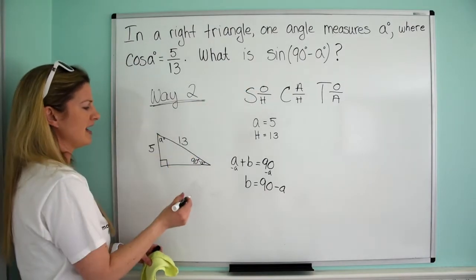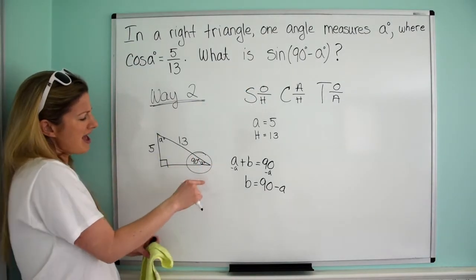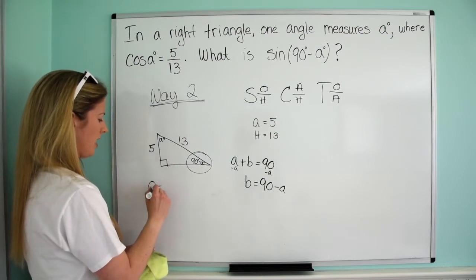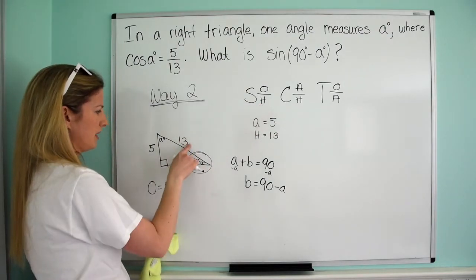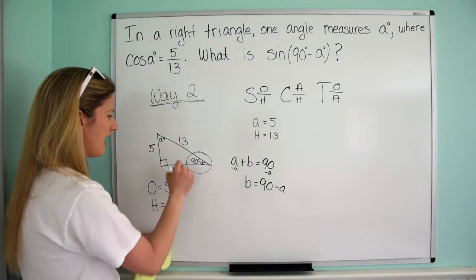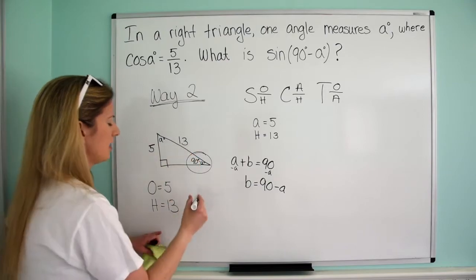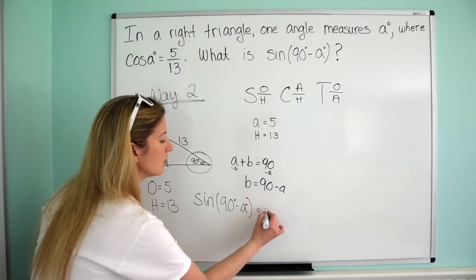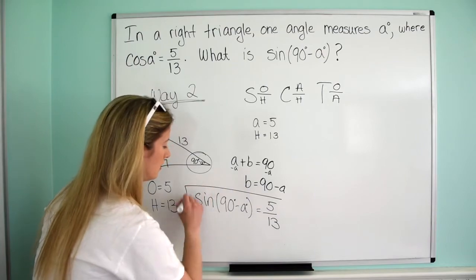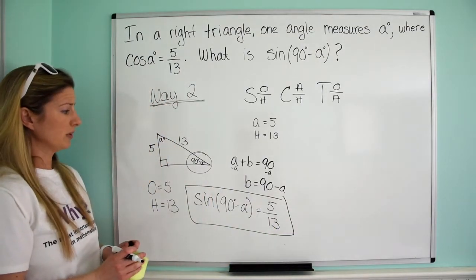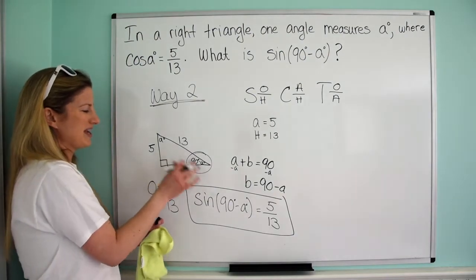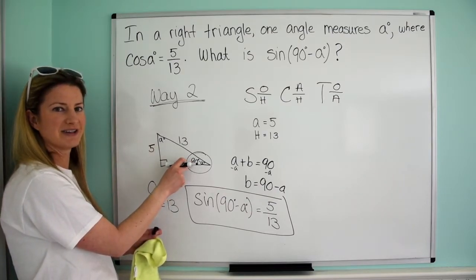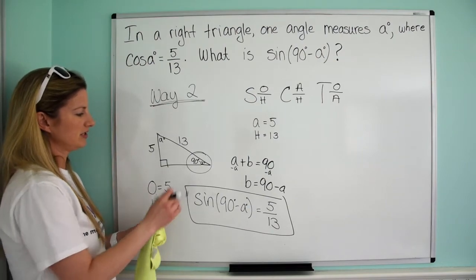Now it says we want the sine of 90 minus A. There's my angle, 90 minus A. I just need the sine. And so I come over here and I say sine is opposite over hypotenuse. Which side is my opposite? My opposite is 5. Which side is my hypotenuse? My hypotenuse is 13. So then that means that the sine of this angle is opposite over hypotenuse. This already is the sine of 90 minus A, is opposite over hypotenuse, 5 over 13.